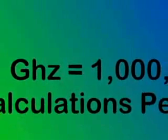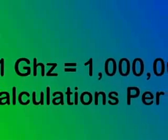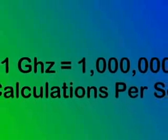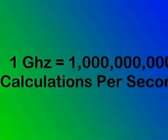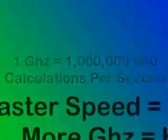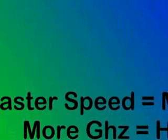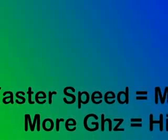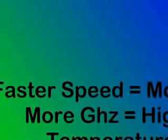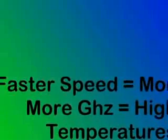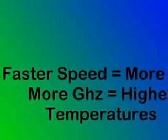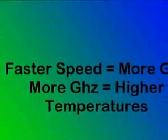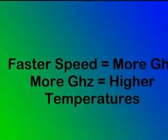A calculation is the math that the computer does to open a program, run a game, move your mouse cursor, anything like that. The faster your computer's speed, the more it can do and the faster it can do it. However, with faster speeds, you get more heat being produced by these chips.